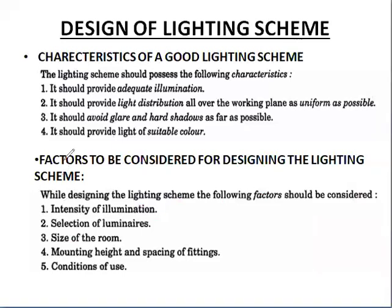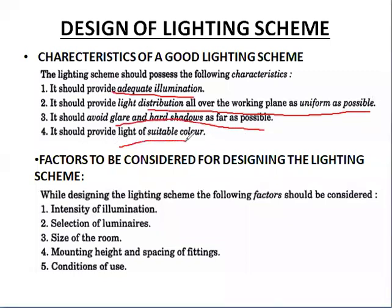For the design of a lighting scheme, it should possess the following characteristics: it should provide adequate illumination; it should provide light distribution over the working plane as uniform as possible; it should avoid glare and hard shadows as far as possible; and it should provide light of suitable colour. Factors to be considered while designing a lighting scheme include: intensity of illumination, selection of luminaires, size of the room, mounting height and spacing of fittings, and conditions of use.